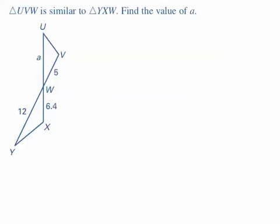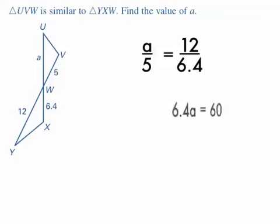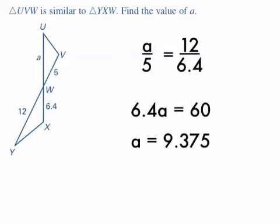Triangle UVW is similar to triangle YXW. Find the value of A. The corresponding sides are: A corresponds to 12, and 5 corresponds to 6.4. I set up the proportion as A/5 = 12/6.4, where A and 5 come from the smaller triangle and 12 and 6.4 from the larger. Cross-multiplying gives 6.4A = 60. Dividing both sides by 6.4 gives A = 9.375.